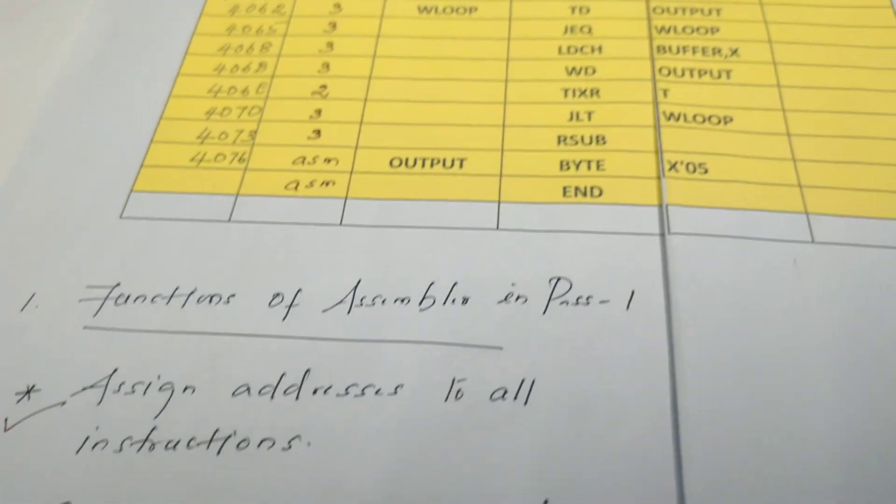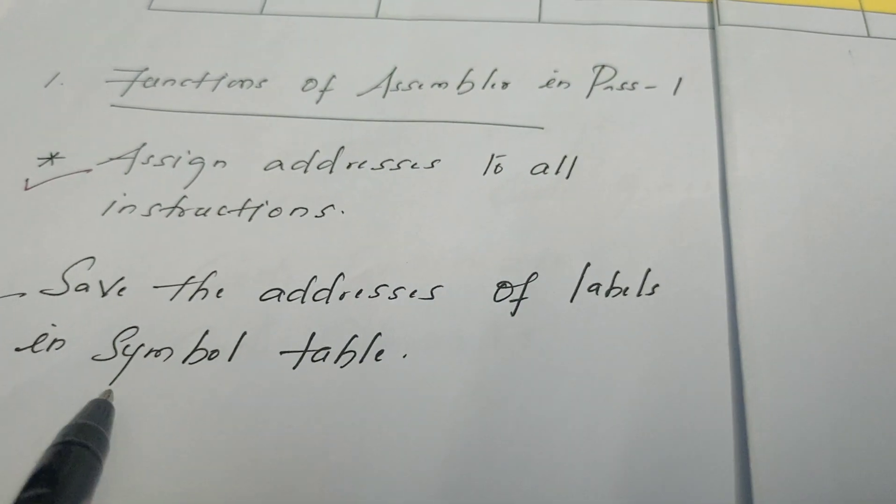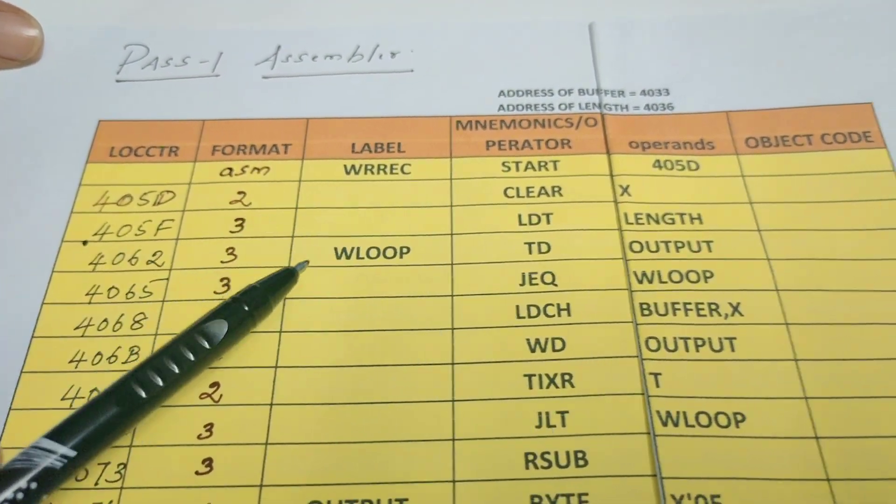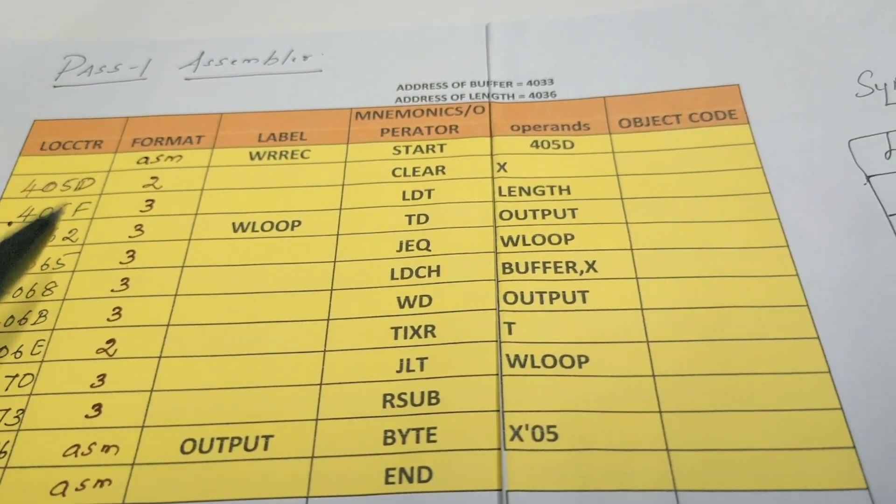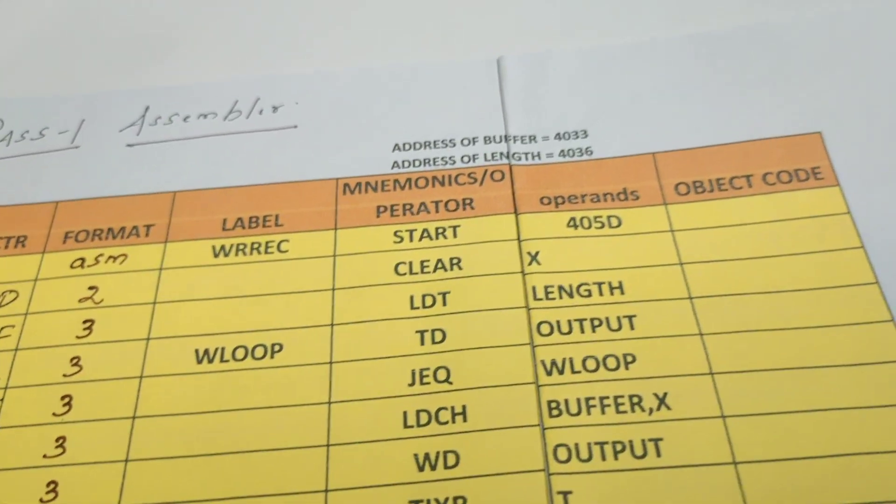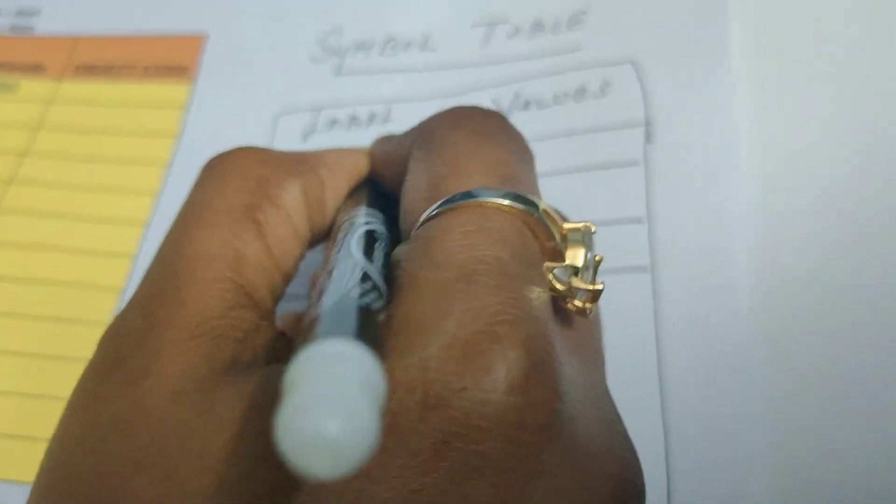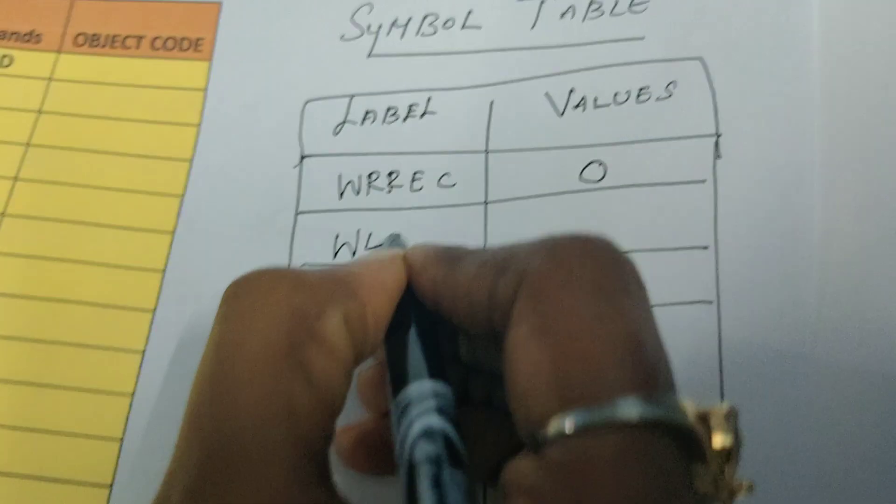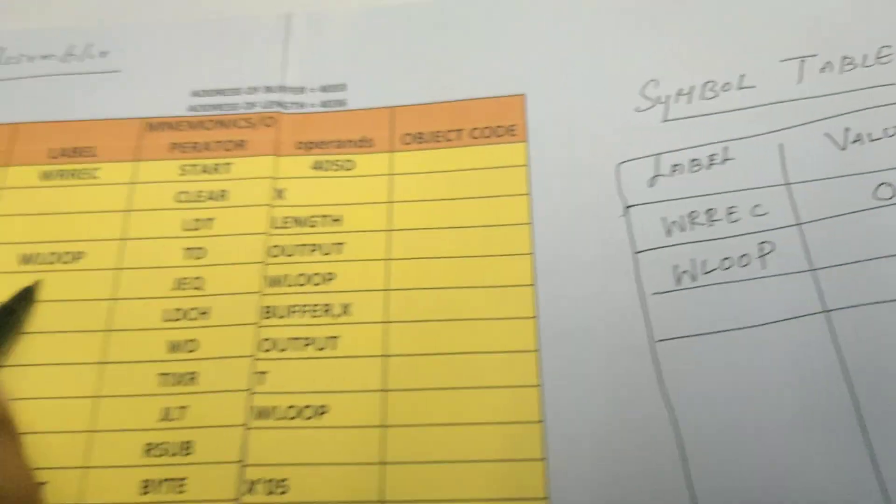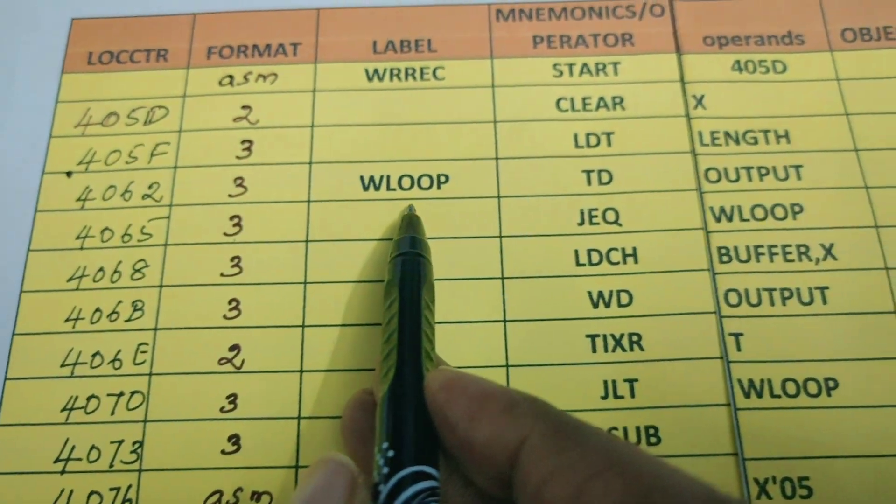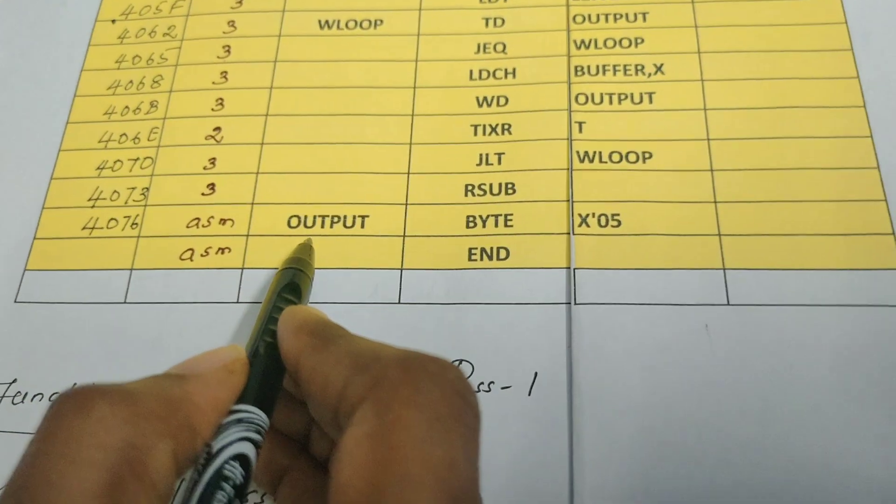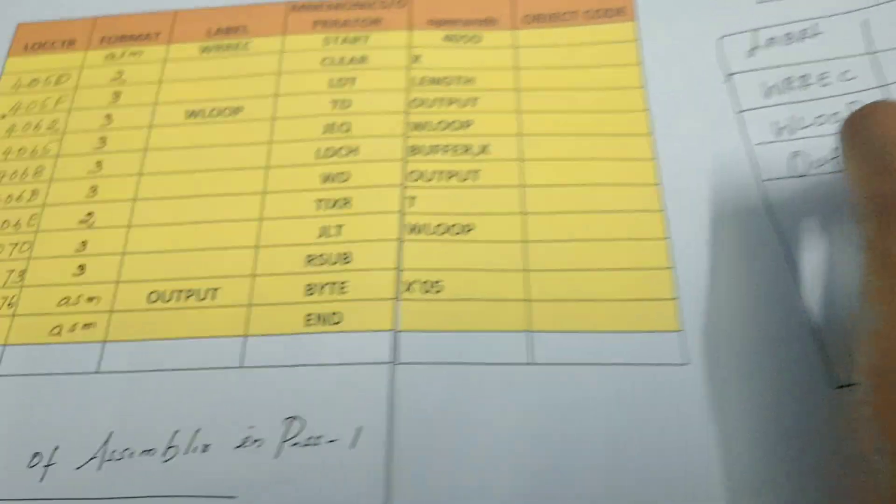Now let us move on to the second step. What is the second step? We need to save the addresses of the labels in the symbol table. What are the labels we have here? We have three labels in this program: WRREC, WLOOP, and OUTPUT. WRREC is the name of the program. We can push into the symbol table but we cannot assign any value, let us assign the default value which is 0. The next label is WLOOP, it is referring to the address 4062. The label OUTPUT has the value 4076.